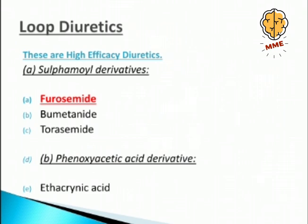Loop diuretics are high-efficacy diuretics — the most effective ones. They can be of two types: sulfonamide derivatives — furosemide, bumetanide, torsemide — and phenoxyacetic acid derivatives — ethacrynic acid. Among these, furosemide is the most important one. Please do not forget the name.